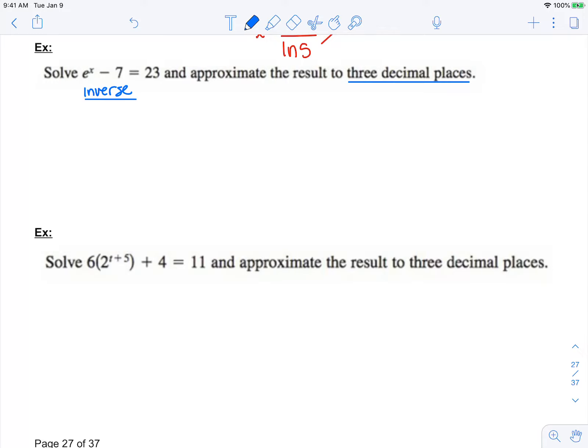Now in this example, the best method to use is inverse property because we won't be able to set each side to be a power of e.